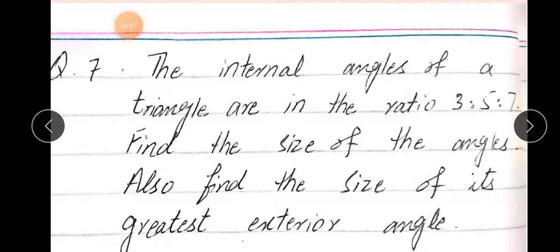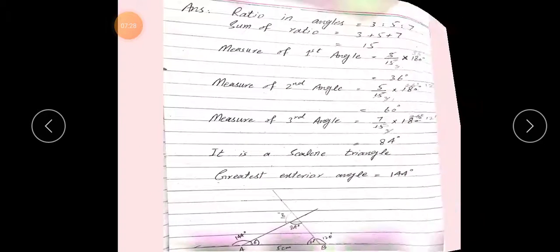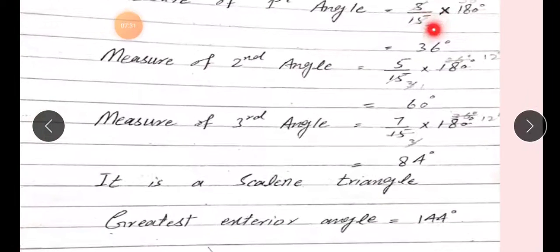Triangle ke andarooni jo angles hain, unka ratio hamein diya gaya hai 3:5:7. Hamne angles ka size find out karna hai. Iske ilaawa, find the size of its greatest exterior angle. Hamne inaka sabse bada jo hai, woh exterior angle ka size batana hai. Interior kise kahte hain - triangle ke andar waale jaavion ko. Aur exterior kise kahte hain - triangle ke baahir waale jaavion ko. Is wajah se hamein iska triangle diagram bhi draw karna padega.